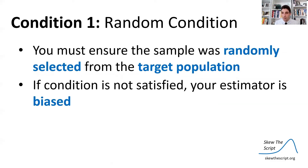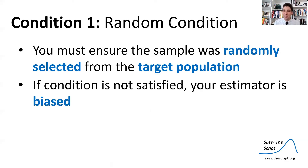So to make sure that you have an unbiased sampling method, you must ensure that you're randomly selecting your samples from the target population. If this condition is not satisfied, then your estimator is biased. That's the random condition.